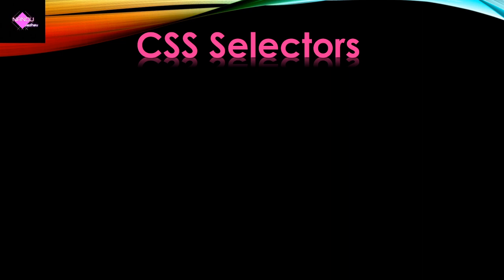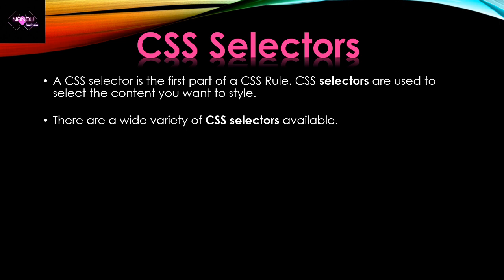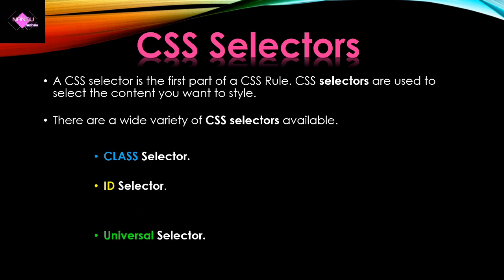So what is a CSS selector? The CSS selector is the first part of the CSS rule, and these CSS selectors are used to select the content with the proper style as per our requirement. There are a wide variety of CSS selectors, and the major ones commonly used are: the class selector, the ID selector, and the universal selector.